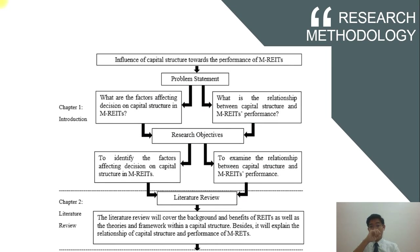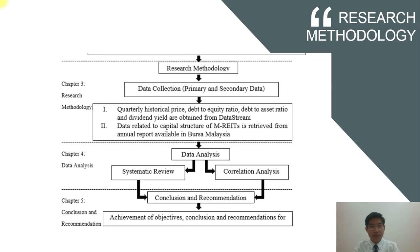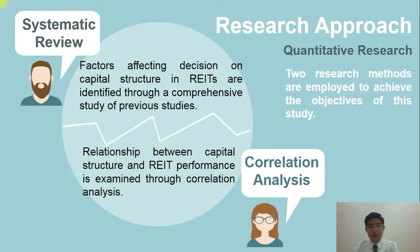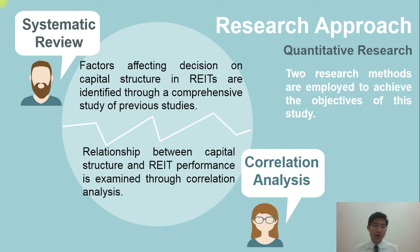Moving on to the research methodology, as shown in the flowchart. For the research approach, a quantitative research method is used. A systematic review is used to analyze the factors affecting capital structure decisions, which is the first objective, and correlation analysis is used for the second objective of examining the relationship.